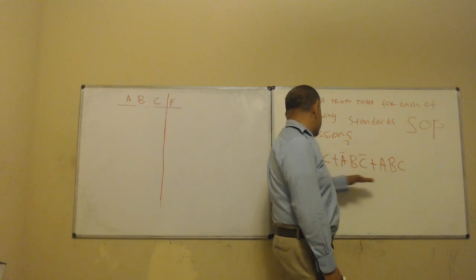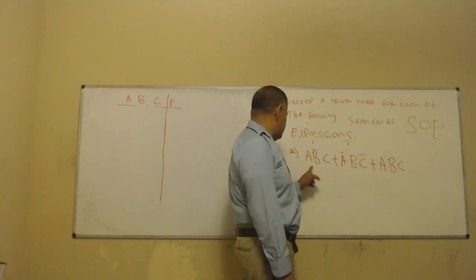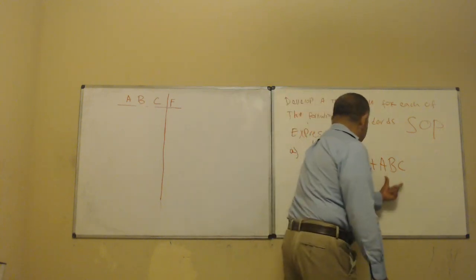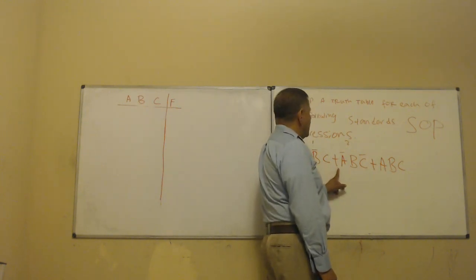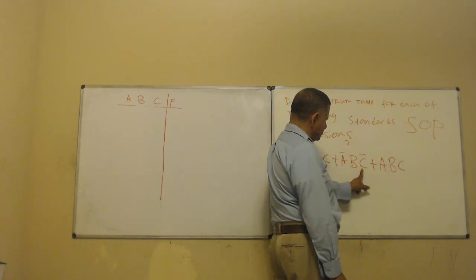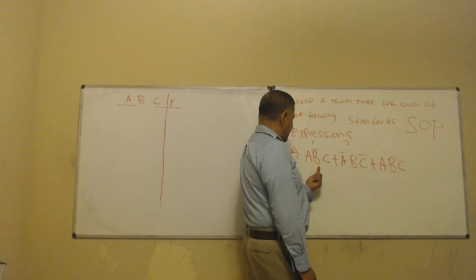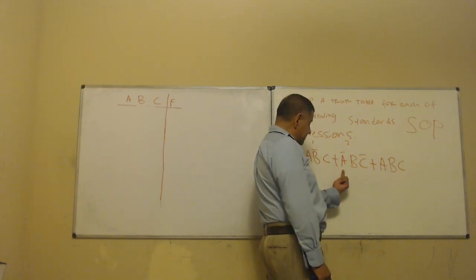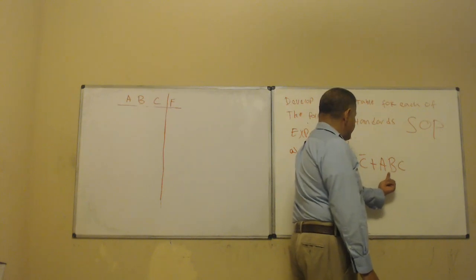The expression we're doing has an AND gate structure. We have A·not-B·C, or A·B·not-C, or A·B·C. Again, that's not-A·B·C, or not-A·B·not-C, or A·B·C.